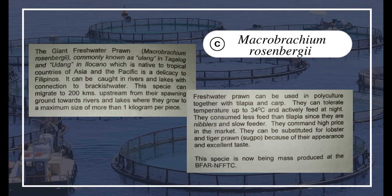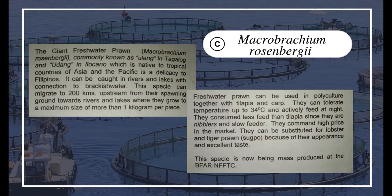According to the National Freshwater Fisheries Technology and Information Services, the giant freshwater prawn Macrobrachium rosenbergii, commonly known as ulang in Tagalog and udang in Ilocano, is native to tropical countries of Asia and the Pacific and is a delicacy to Filipinos. It can be caught in rivers and lakes with connection to brackish water. This species can migrate up to 200 kilometers upstream from their spawning ground toward rivers and lakes, where they grow to a maximum size of more than one kilogram per piece.